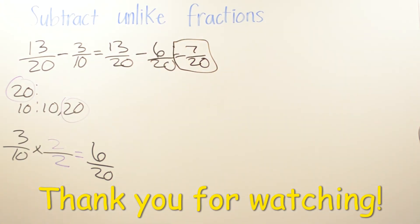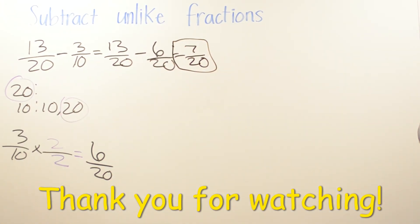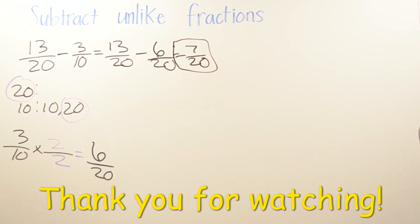So we have 13/20 minus 6/20. Thirteen minus 6 is 7, and the denominator is 20. Your final answer is 7/20. Thank you for watching — don't forget to share with your friends if they need help with this kind of problem.